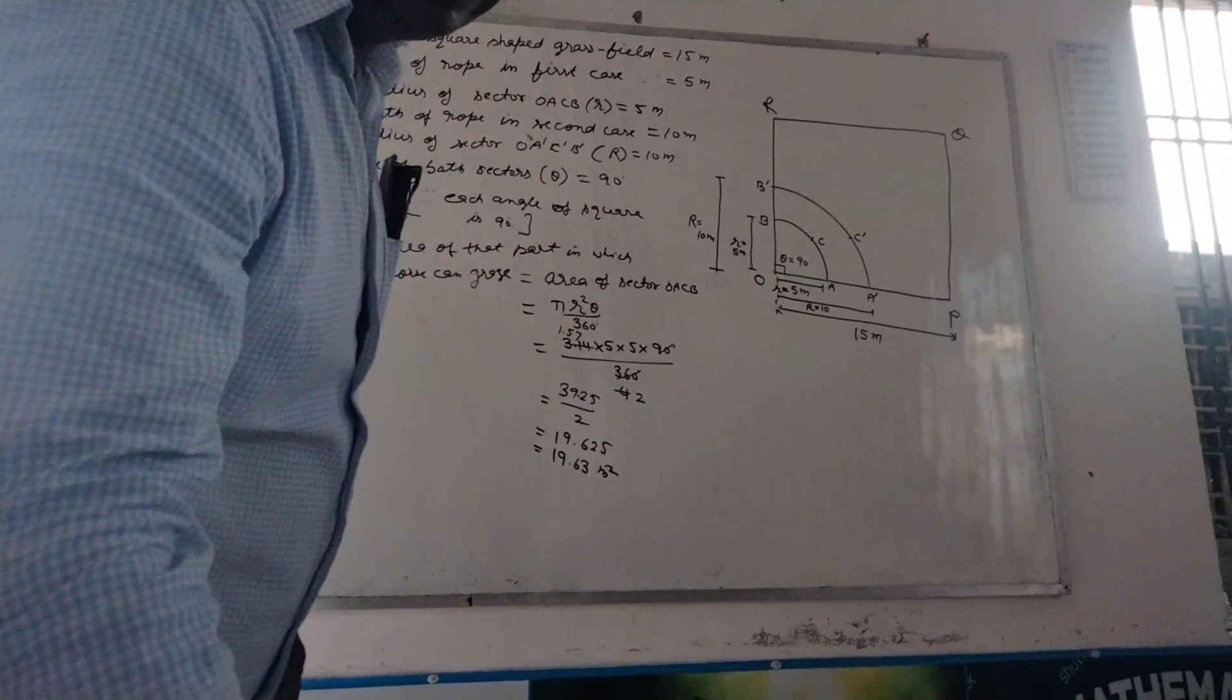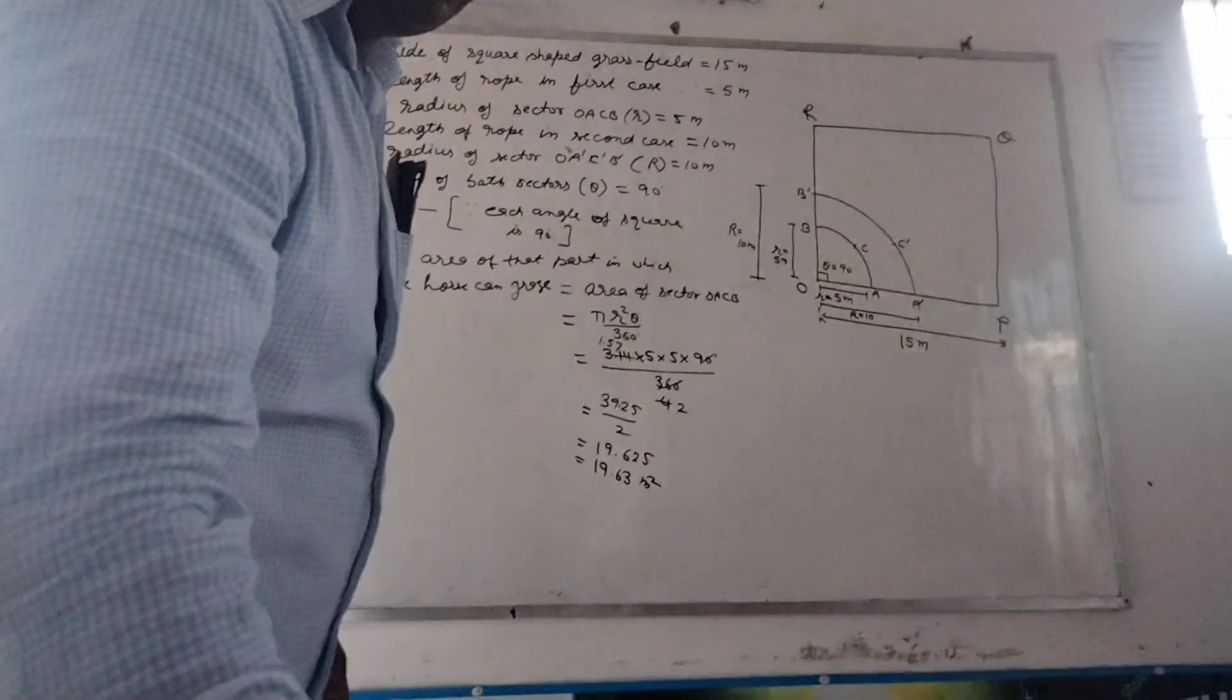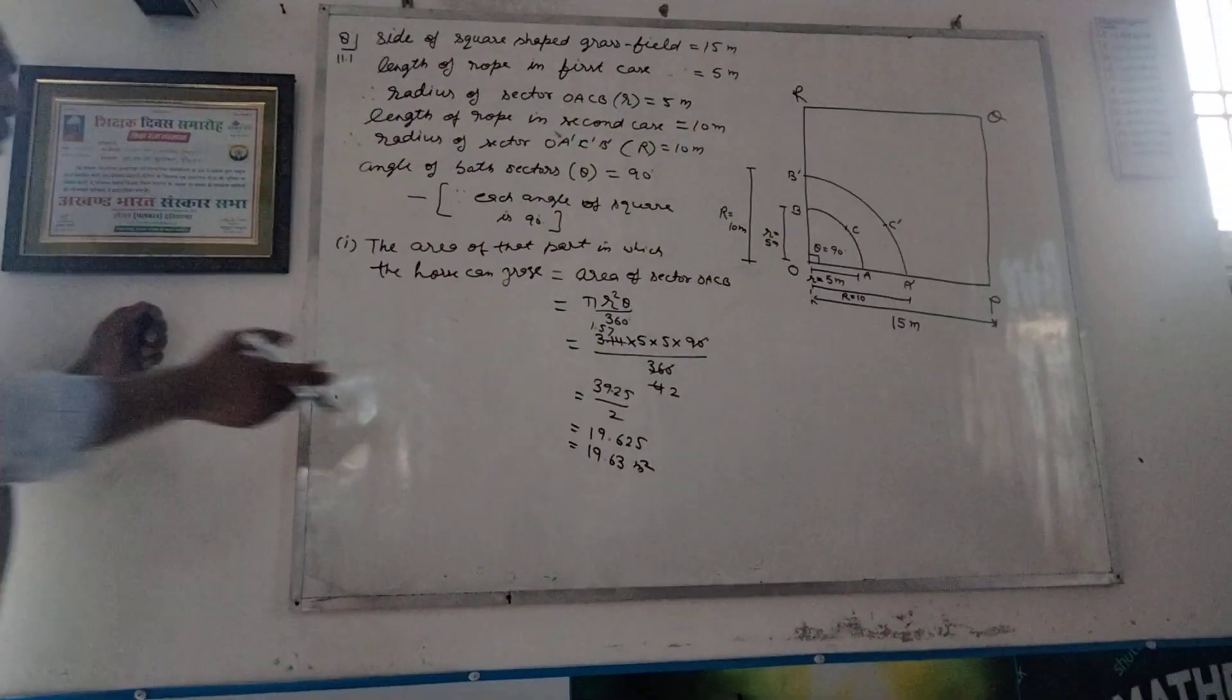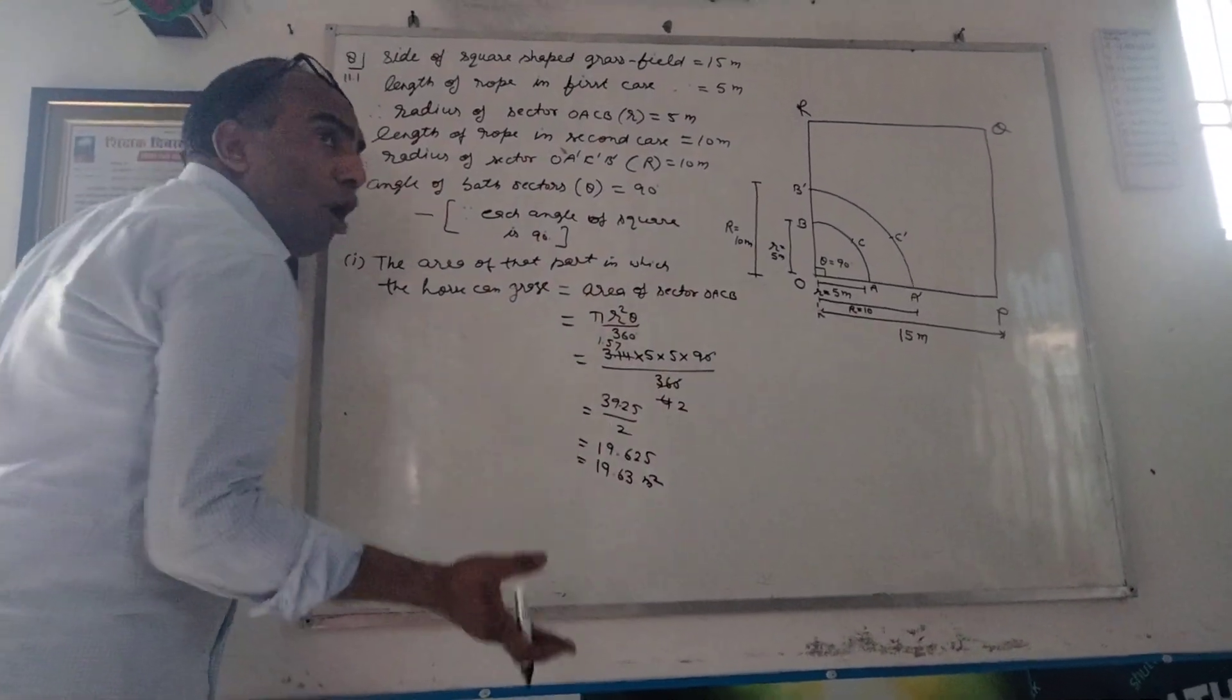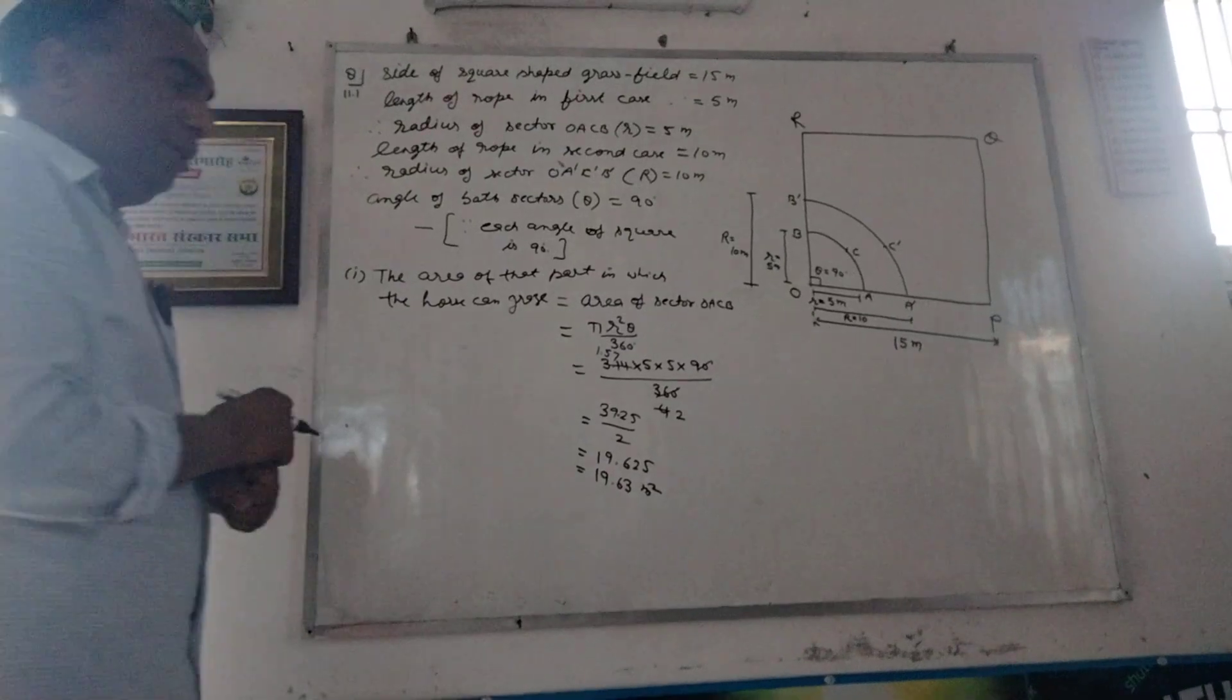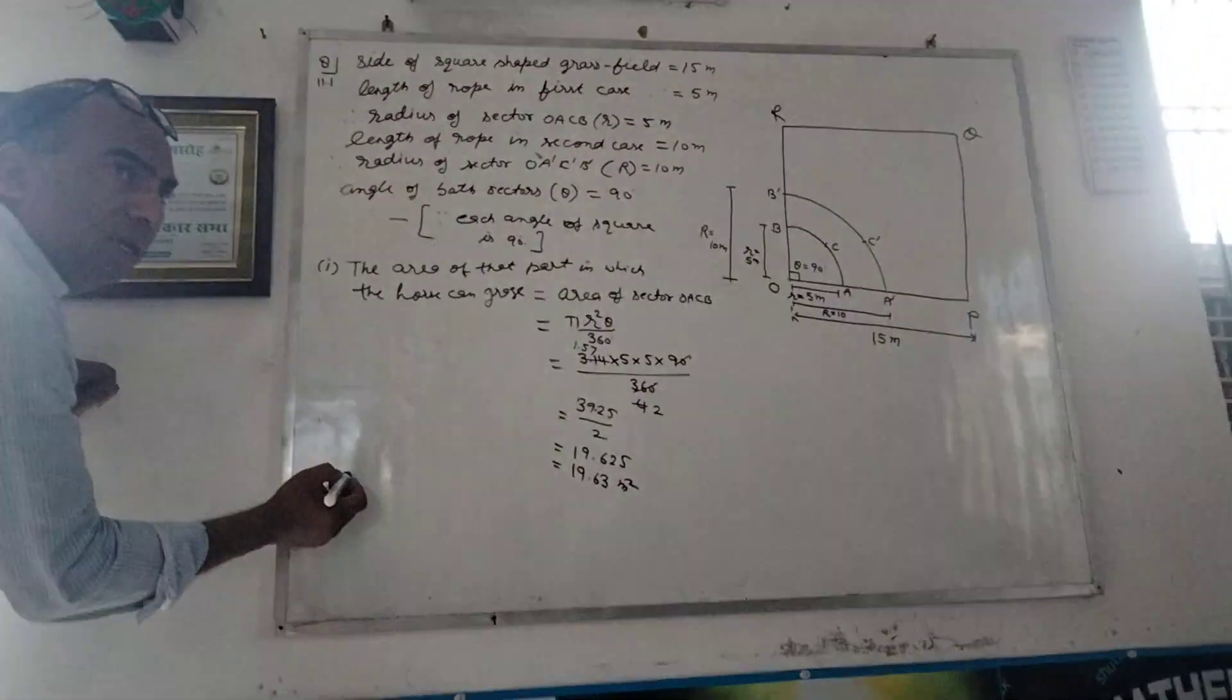The increase in the grazing area, if the rope is increased, then the increase in the grazing area. There will be a lot more area. The number is 10 meters. Now, first of all, we are going to add the second case.